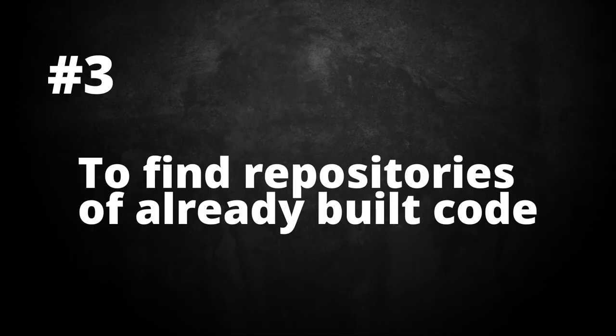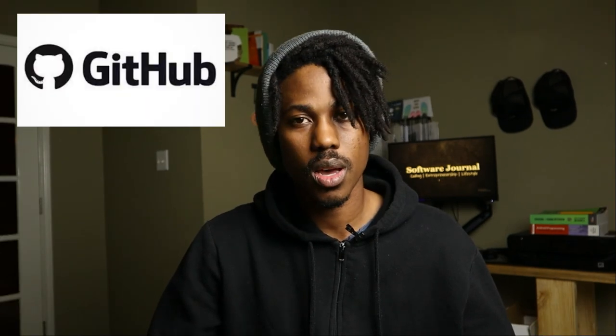Number three: software engineers use Google to find repositories of already-built code. For the most part, a lot of things have already been thought about and already been built, so you really don't need to reinvent the wheel. There are hundreds and even thousands of people who came before you and pretty much laid down the tracks — that's why we have a lot of libraries and frameworks to make our jobs much easier. Because the coding community is big on sharing knowledge and ideas, there are thousands and even millions of repositories online of already-built code. Some of the biggest public repos are GitHub and Bitbucket.